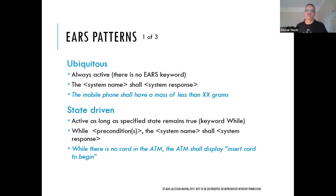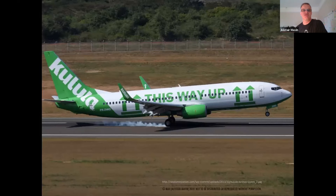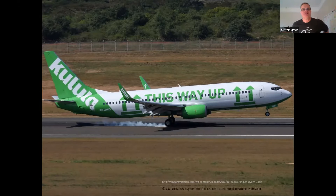The first EARS pattern is Ubiquitous — requirements that are always active with no EARS keyword. The form is: the system name shall system response. For example: 'The mobile phone shall have a mass of less than XX grams.' State-driven requirements are active as long as specified states remain true, using the keyword 'while.' The form is: while some precondition, the system name shall system response. For example: 'While there is no card in the ATM, the ATM shall display please insert card.'